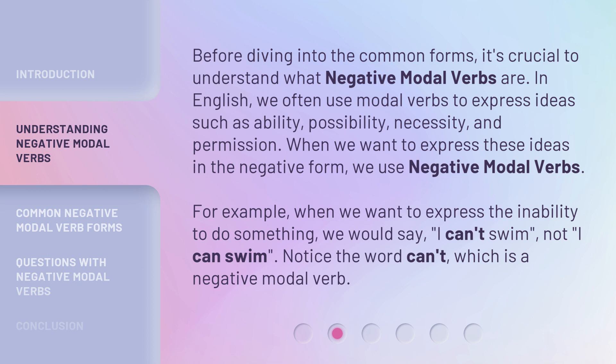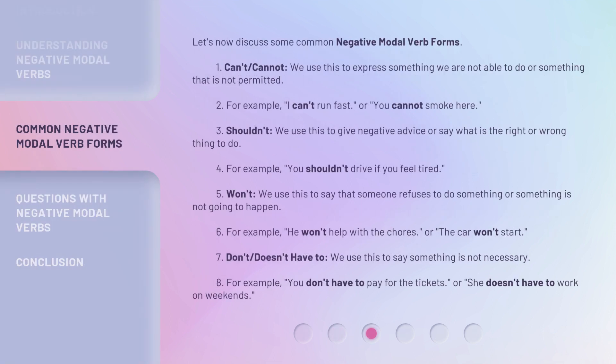For example, when we want to express the inability to do something, we would say, I can't swim, not I can swim. Notice the word can't, which is a negative modal verb. Let's now discuss some common negative modal verb forms.